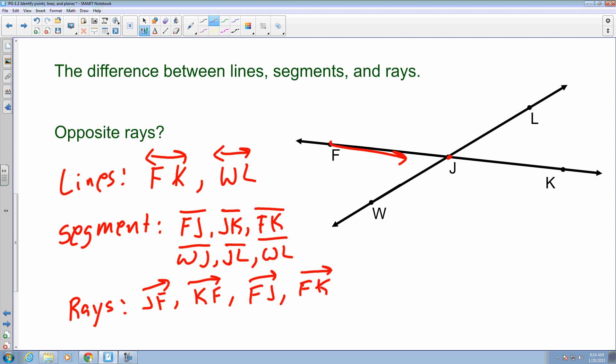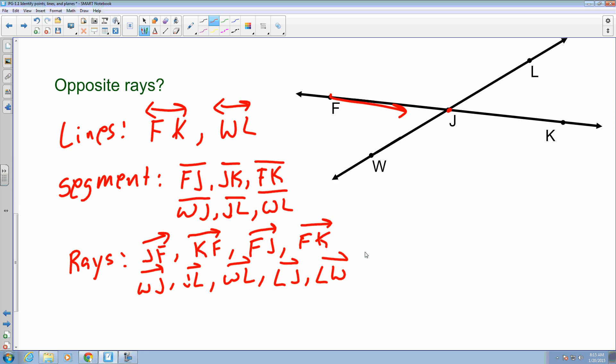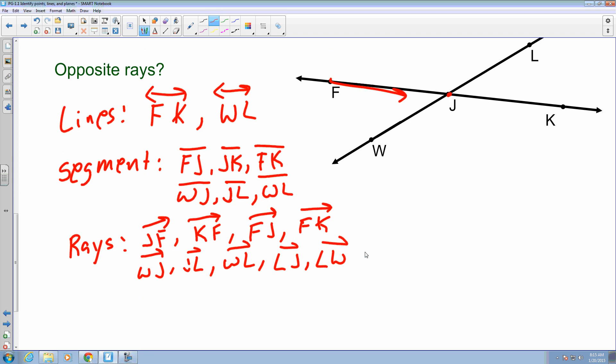And then you would have four other rays for the other one. I can say it's WJ, and JL. There may be some that I missed, so hopefully through this lesson we will catch some.